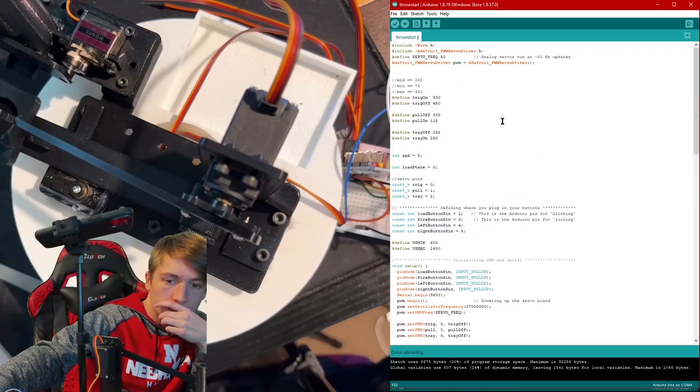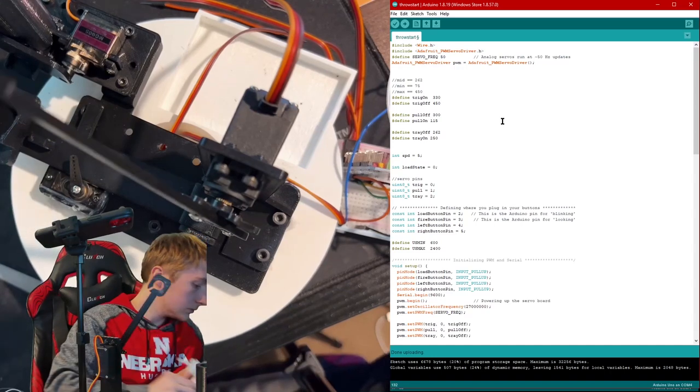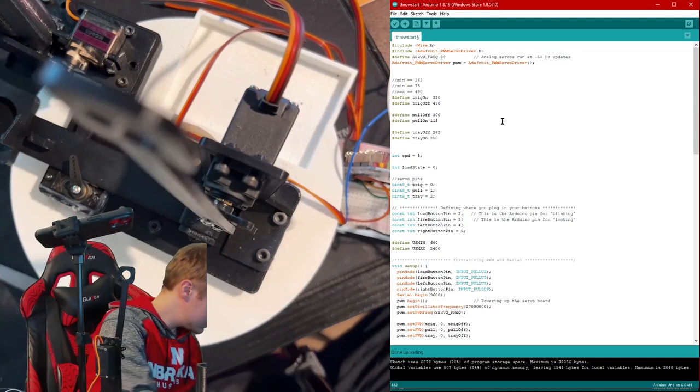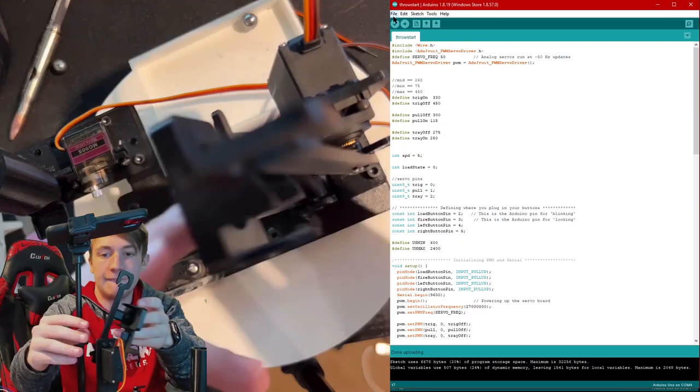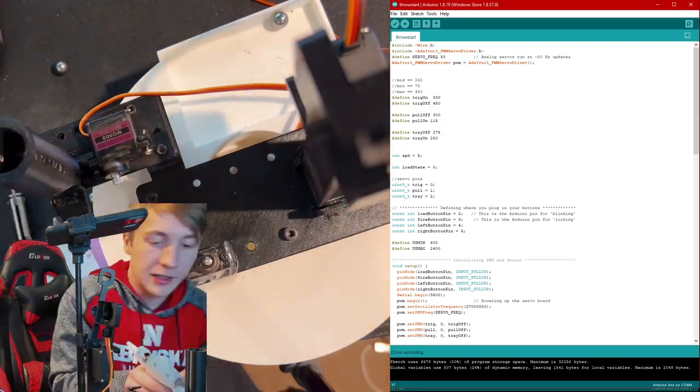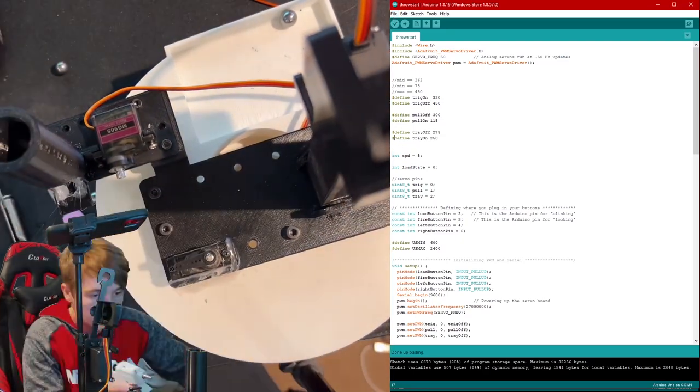I programmed the trigger servo to move over the arm, the pull servo to rotate and stretch the rubber bands, and the trigger servo to rotate back to release. This was fairly simple, but the dispensing mechanism was a bit more troublesome.